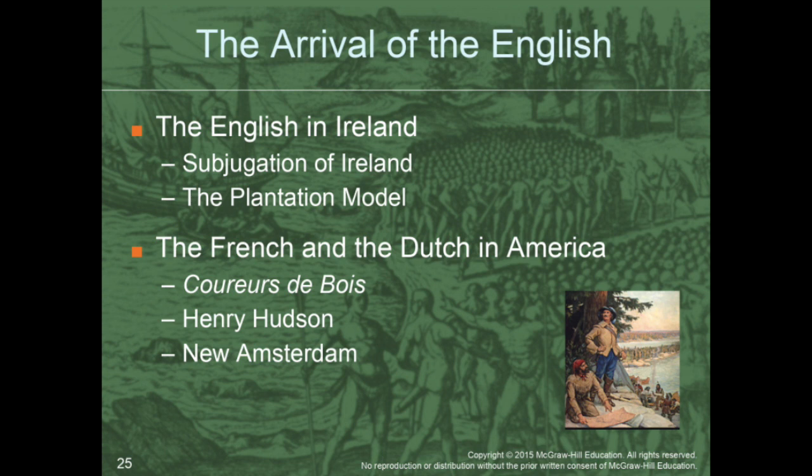That brings us to the French and the Dutch in the Americas. The French and the Dutch had a much different approach to colonization — at first they weren't really doing a ton of colonization, especially the French. The French were more interested in establishing fur trading posts, especially with the model of the Coureurs des Bois. You also have Dutchmen like Henry Hudson — the Hudson River is named for him — which is right next to New York, which was actually a Dutch colony before the English got it and named it New York after the area in England called York.